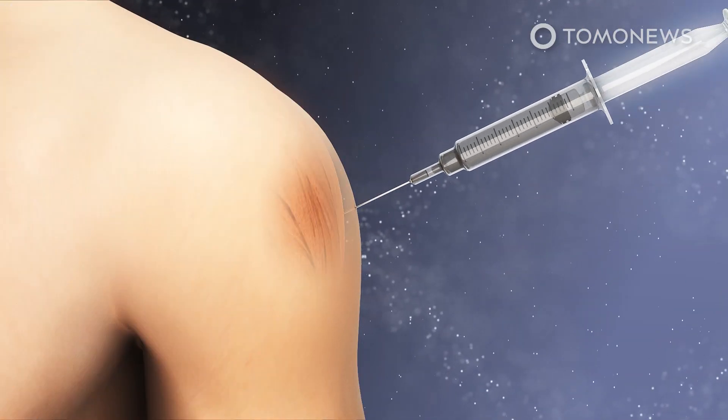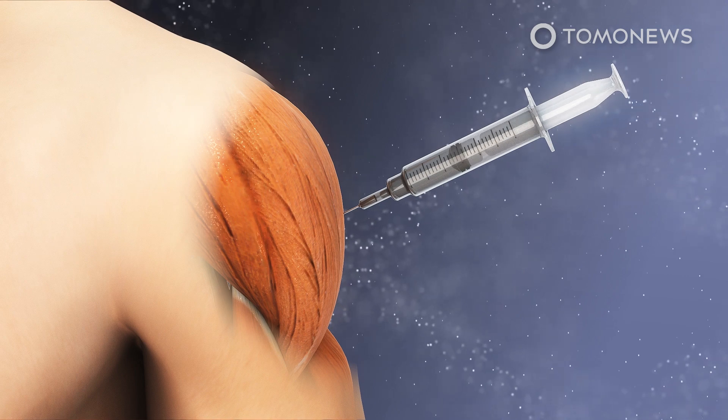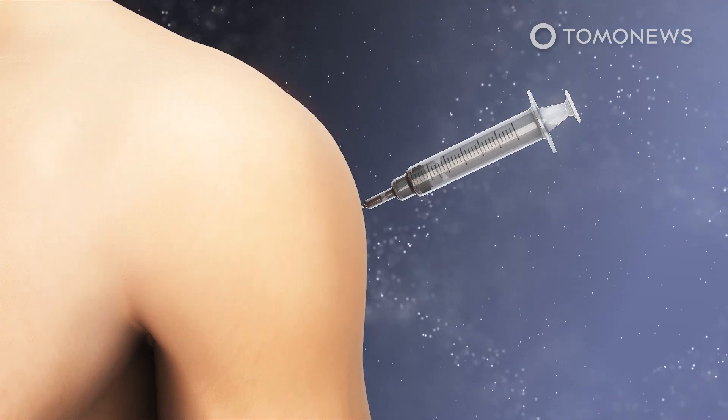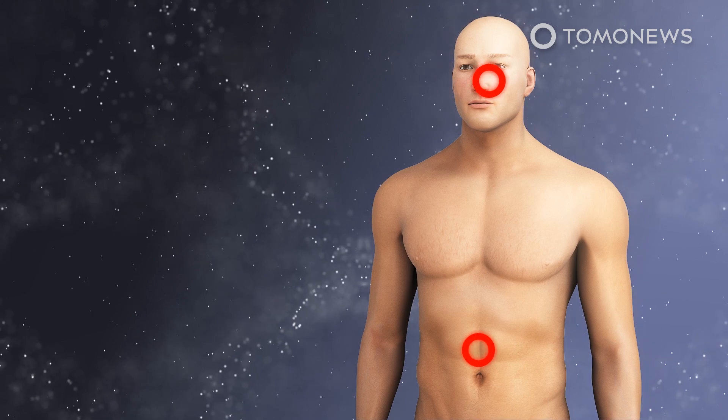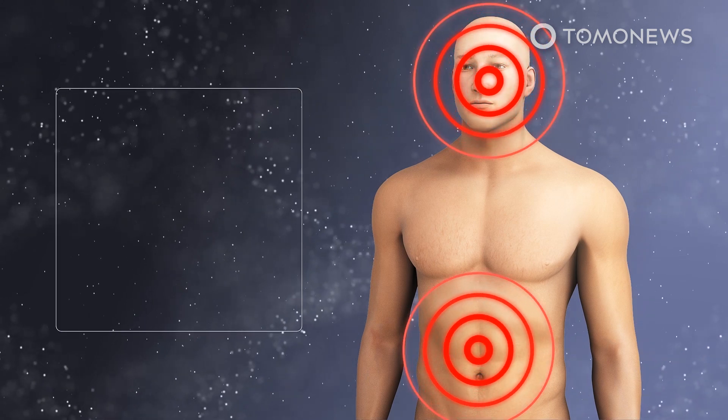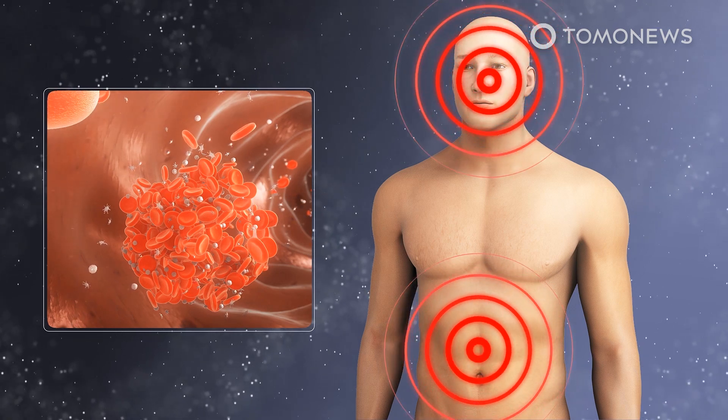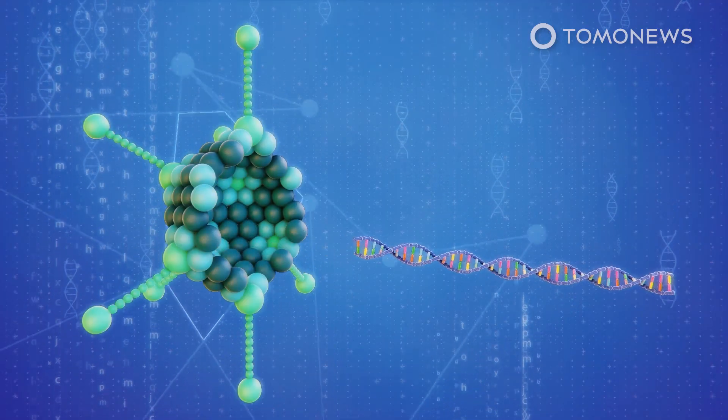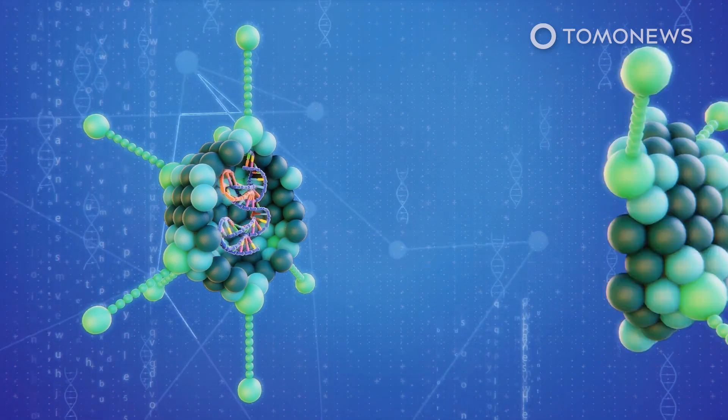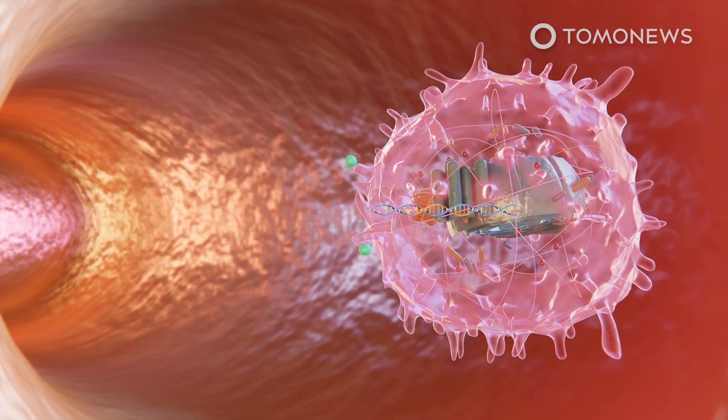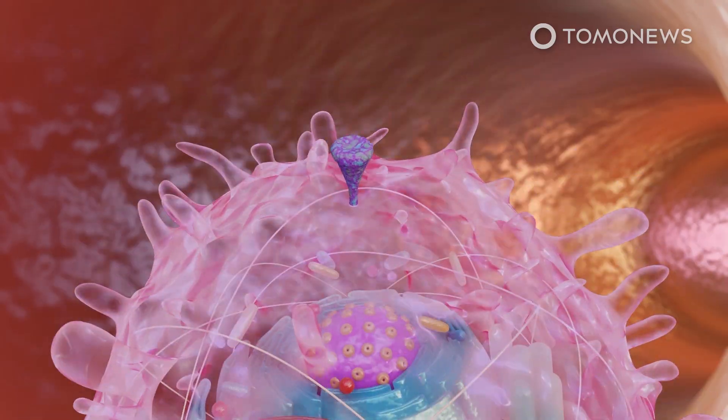The trigger for rare blood clots occurring in patients who receive the Oxford-AstraZeneca COVID-19 vaccine may be a type of protein in the blood that is attracted to one element of the vaccine, according to a new study in the Science Advances Journal. The University of Oxford's vaccine uses a genetically modified common cold virus from chimpanzees to carry blueprints for the coronavirus spike protein.